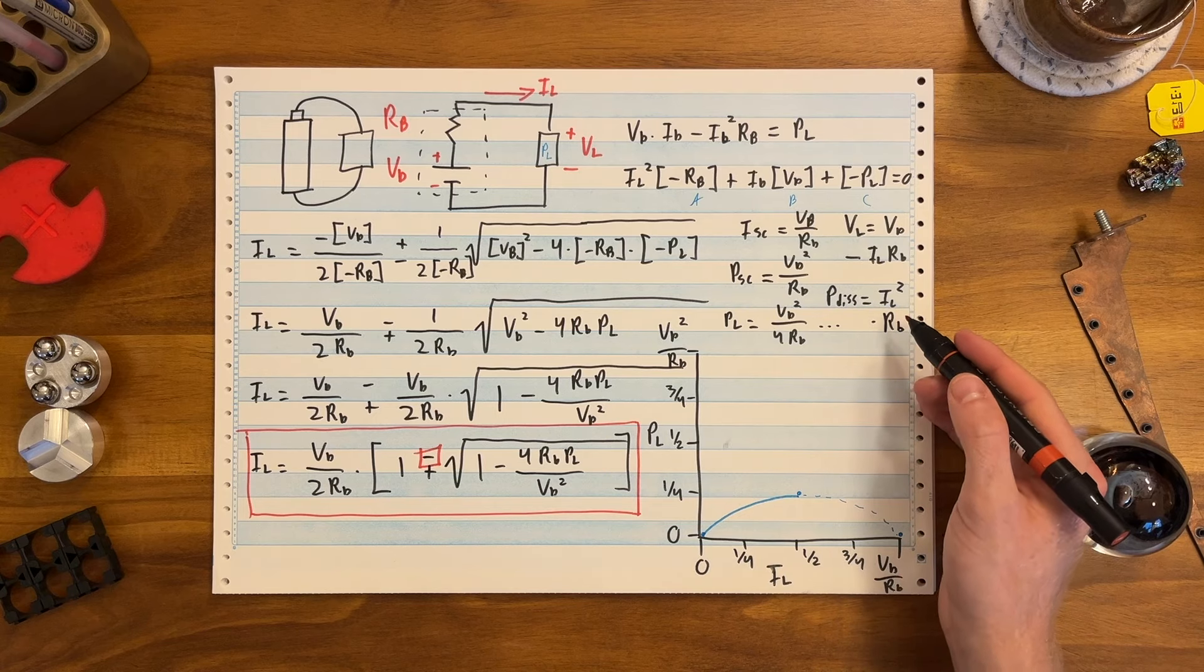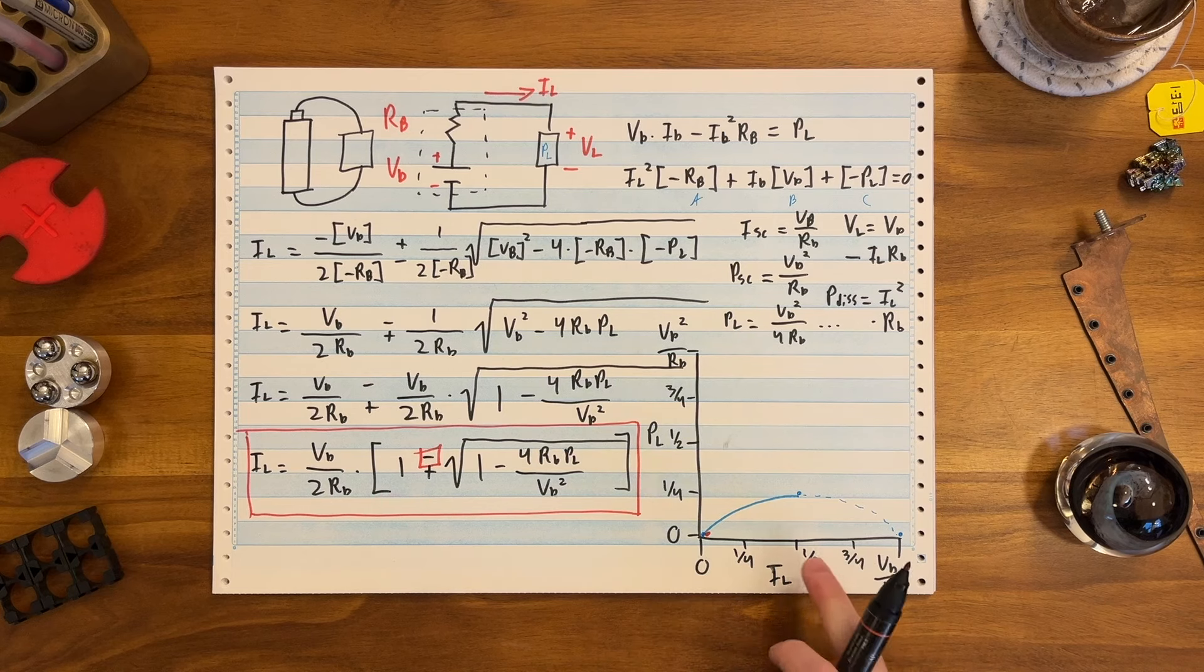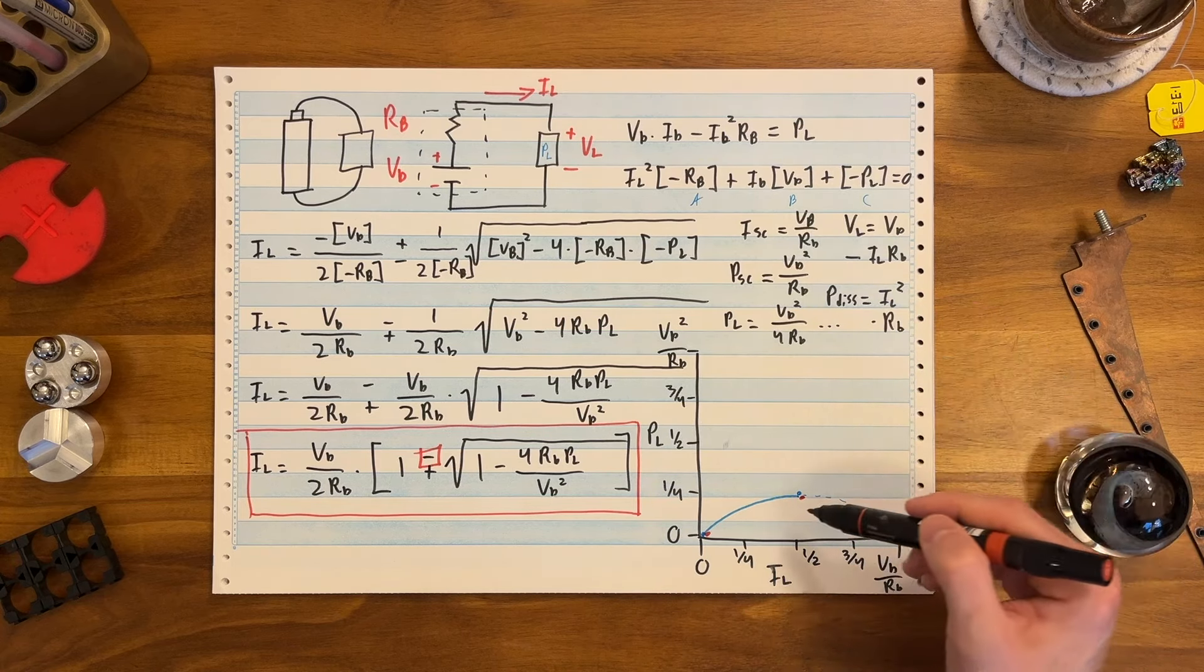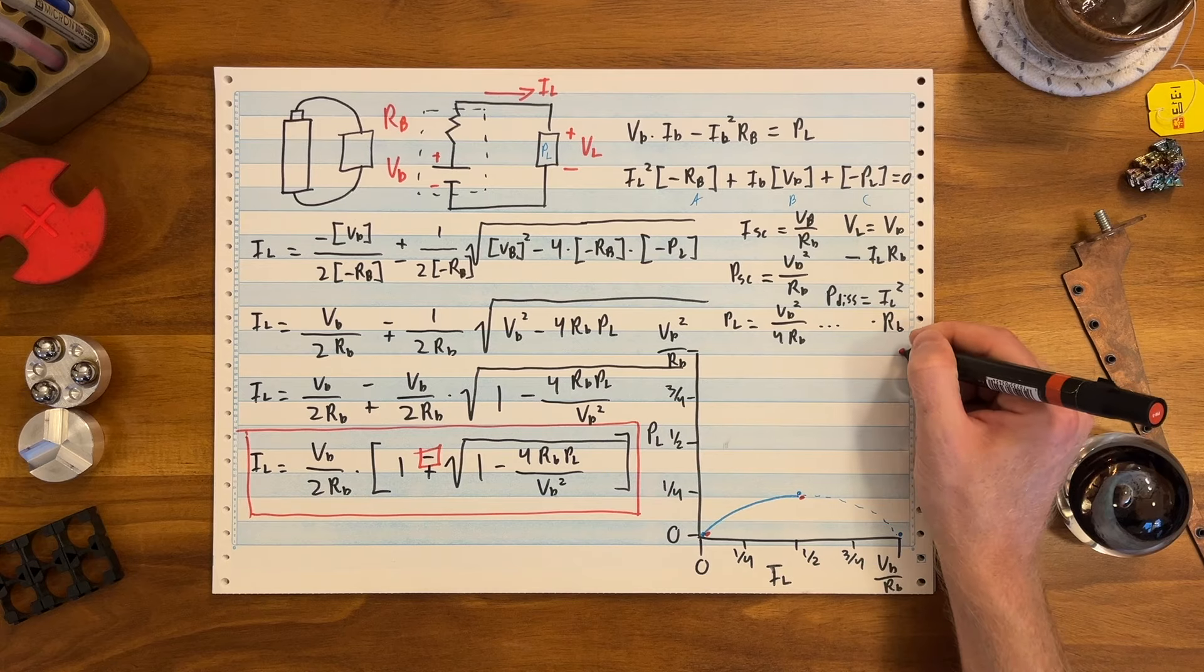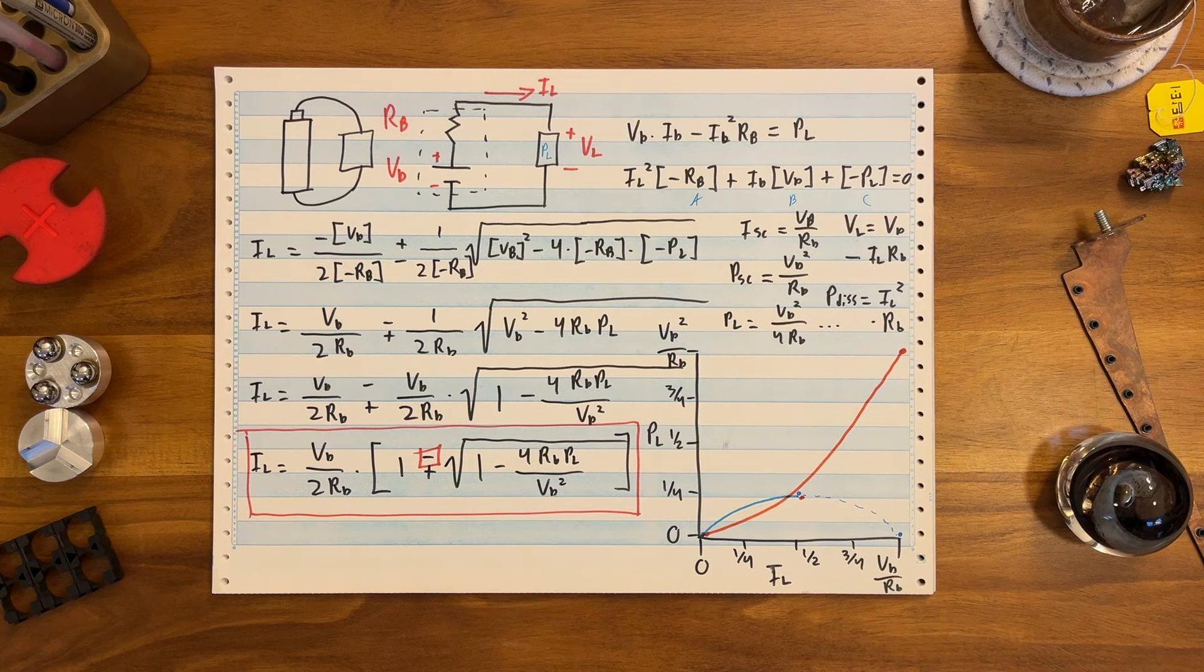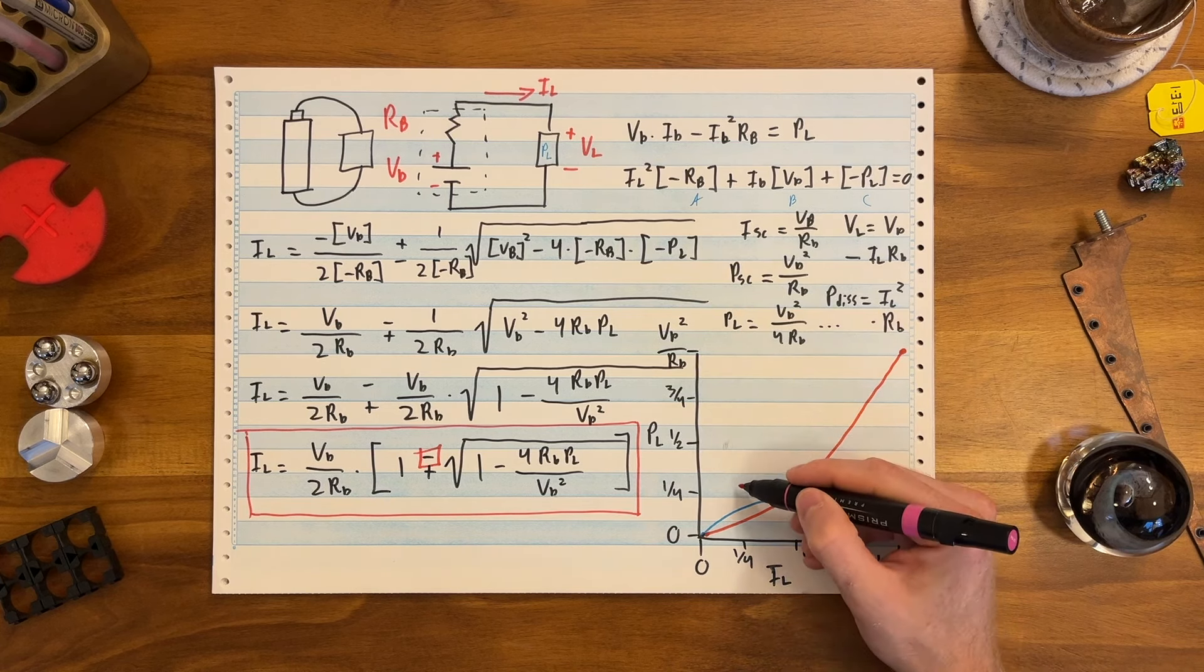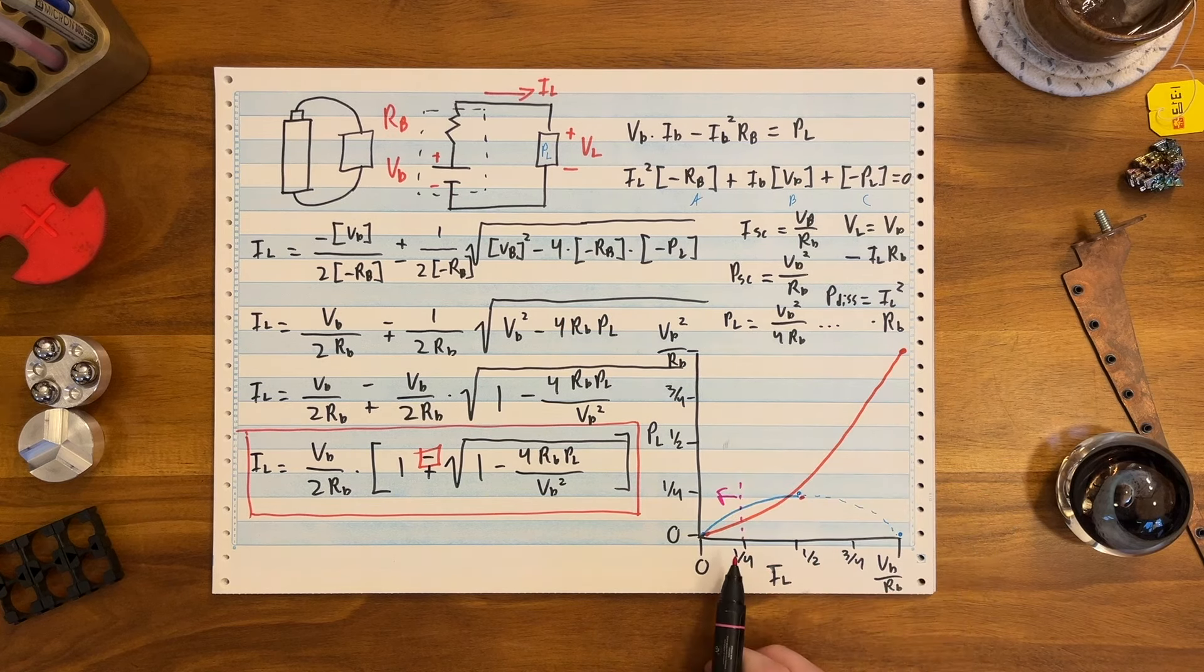So what's going on up here? The power dissipated P dis inside the battery is IL squared times RB, just I squared R. That is quadratic in current. So zero amps equals zero power dissipated. Makes sense to me. If you put in half of the short circuit, you will get one quarter. You will get VB squared over RB divided by four. And if you put in full short circuit current, you will develop the full short circuit power inside of the cell from heat dissipation. And that is a parabola, which I'm going to screw up like this.